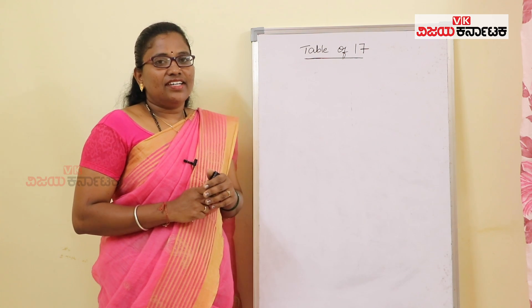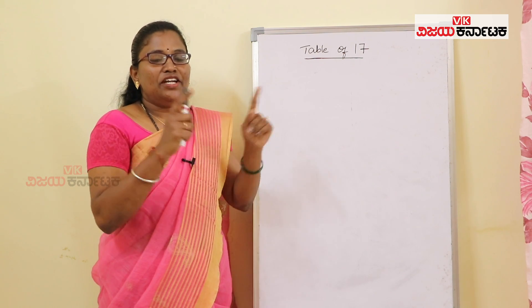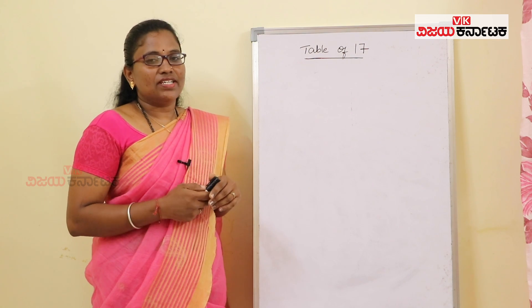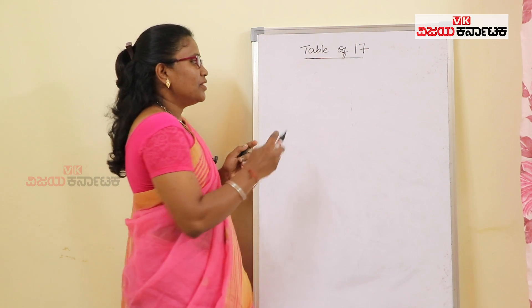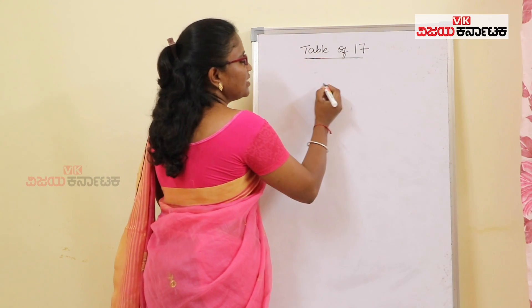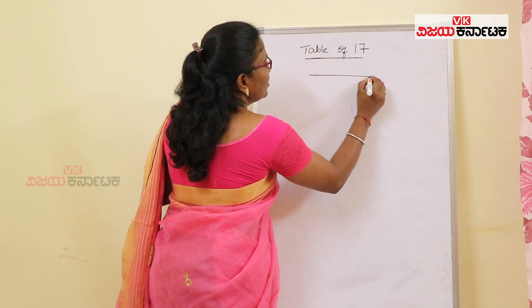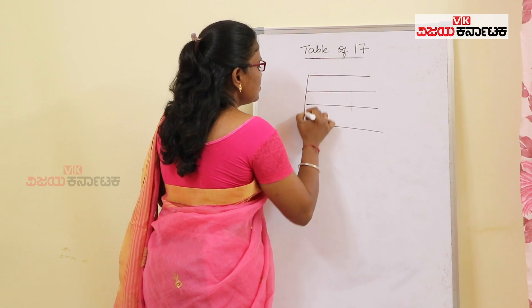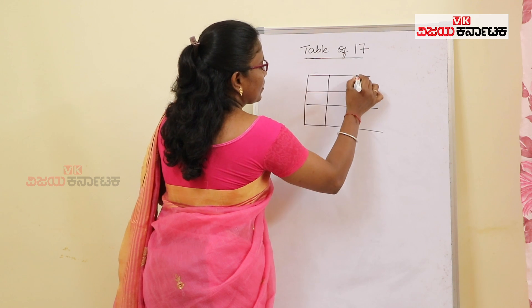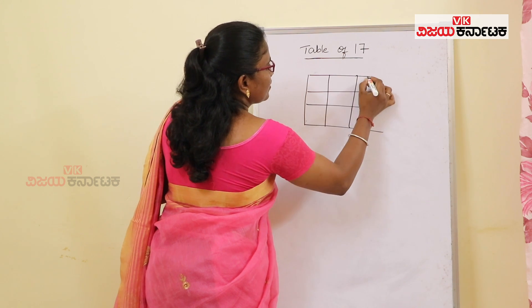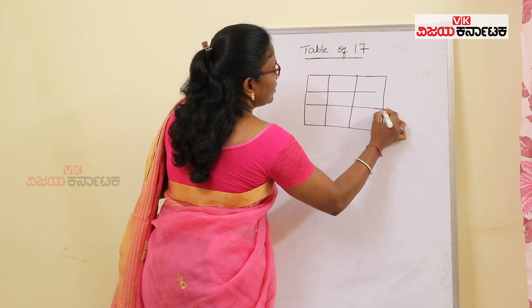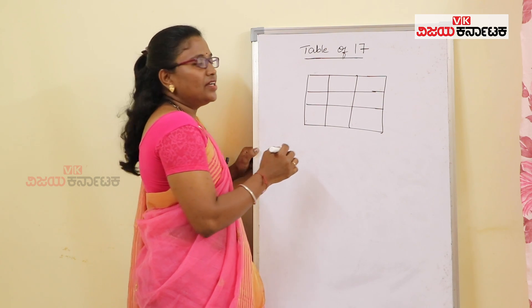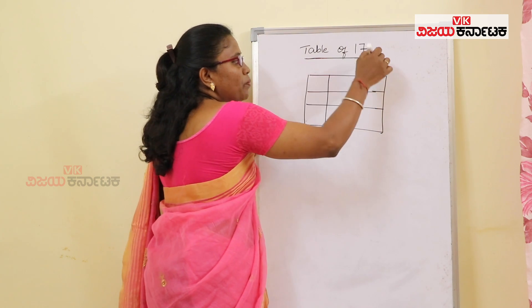The grid is at the top. Let's take 3 rows and 3 columns. In this 3 rows and 3 columns, the numbers will be placed top to bottom.